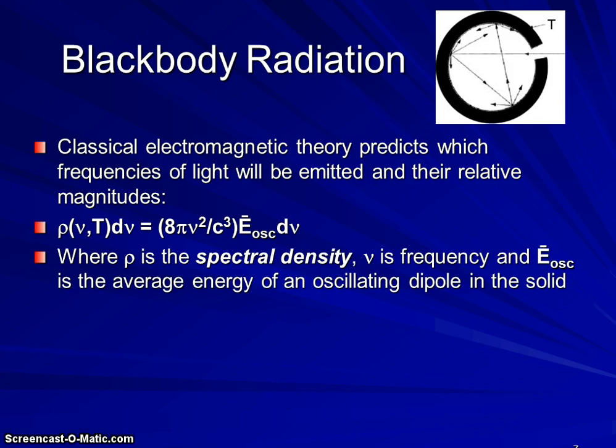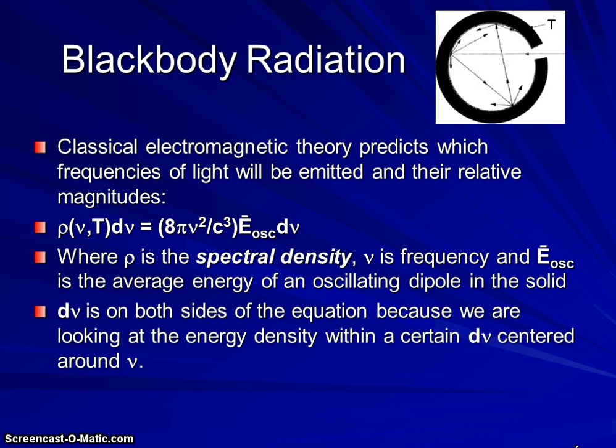ν is the frequency of the light that we're seeing. E is the energy of oscillation, energy that's generated by an oscillating dipole in the solid. dν is on both sides of the equation because what we're really looking at is the energy density within a certain dν, a certain variation of frequency around a particular frequency that we're interested in looking at.